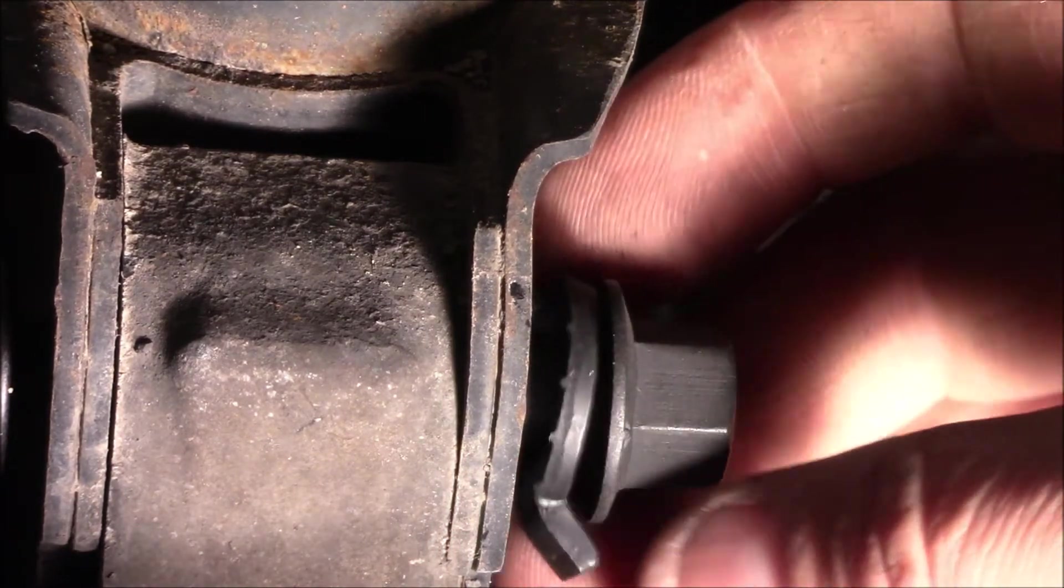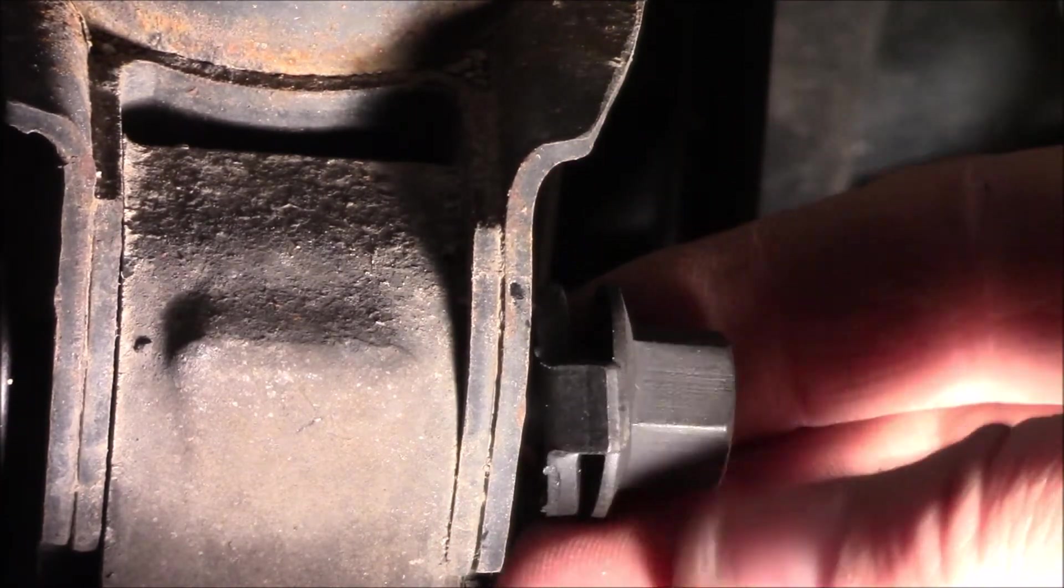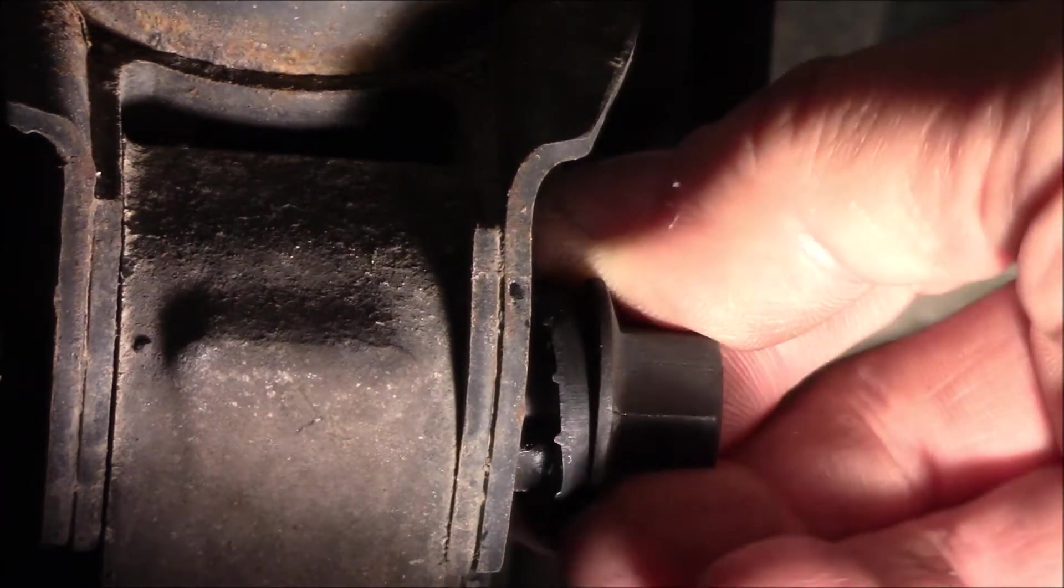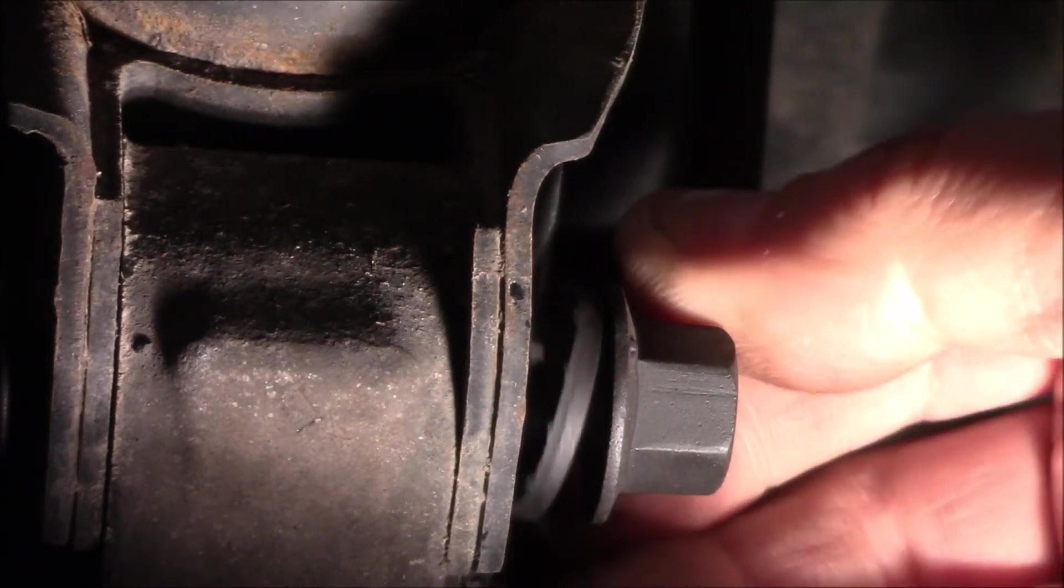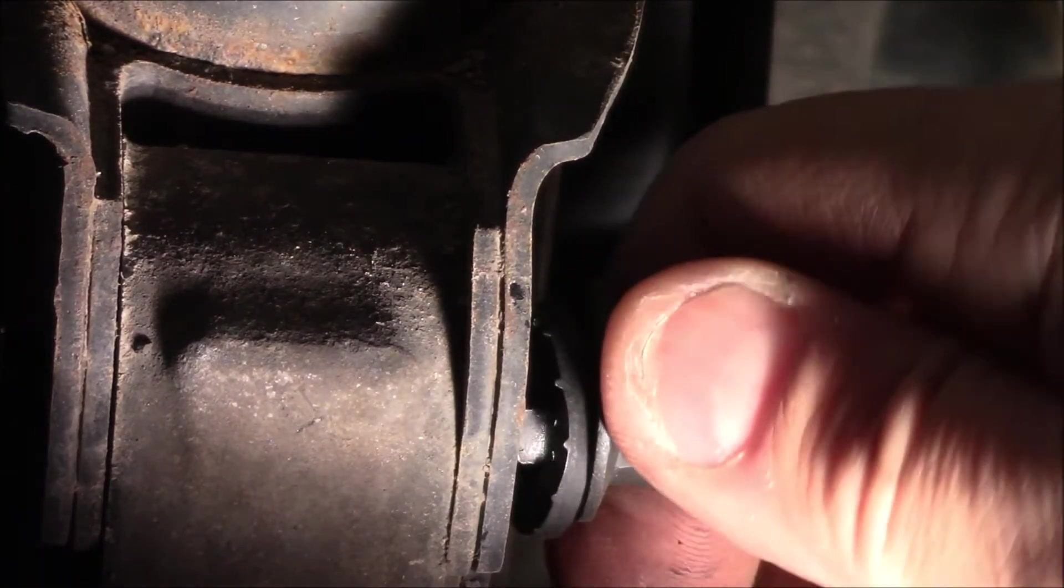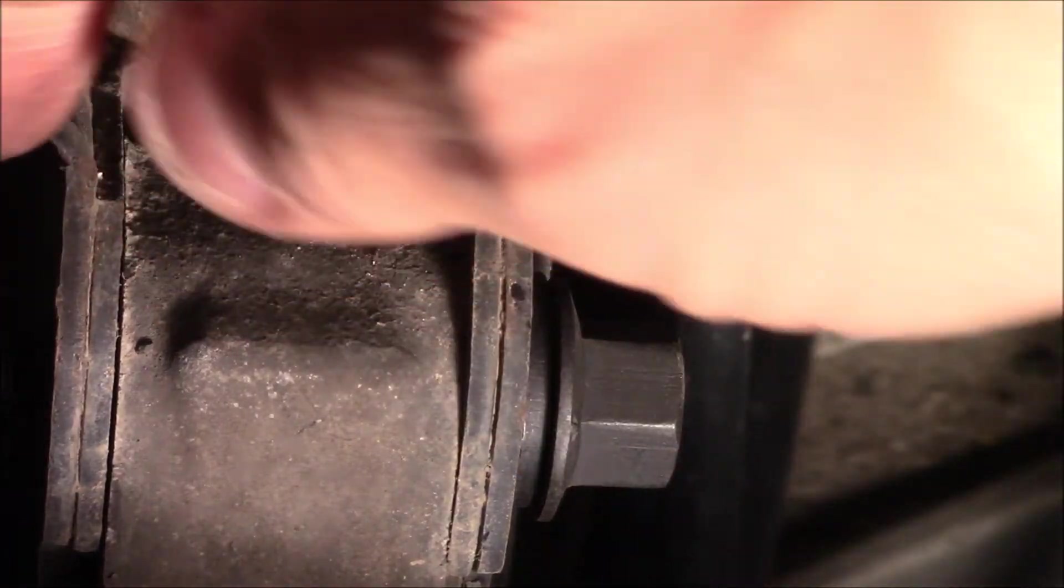When you're installing the bolt, there's a special washer on here with a little tab. You want that pointing inward and the little tab on the other side will lock into where the strut is. So you want to make sure that's all the way in before you start tightening the nut on the other side.